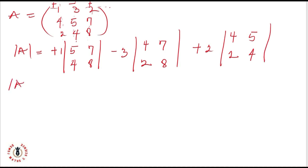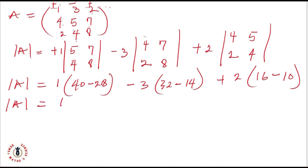The determinant of matrix A will come from 1 into 40 minus 28. That's 12. 12 minus 3 into 32 minus 14. That's 18. Plus 2 into 6 minus 10. That's 6.